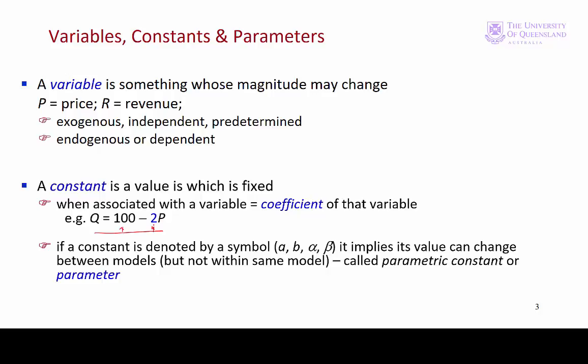But this constant here we call a coefficient. Sometimes these coefficients are expressed as symbols, might be a or b or alpha and beta. That implies that these values can change between models, but they stay the same within a particular model. These are parameters.